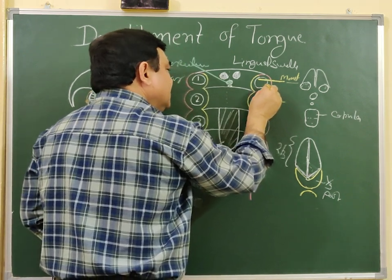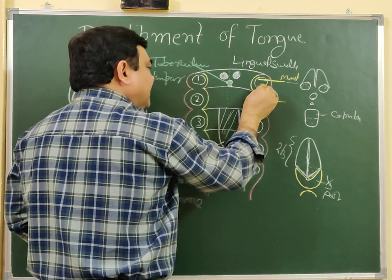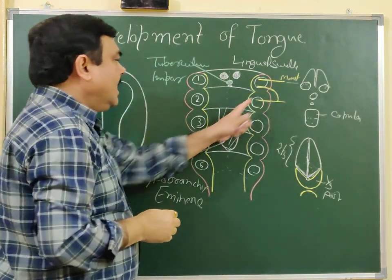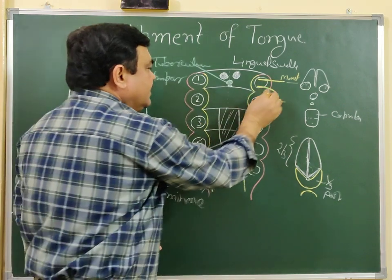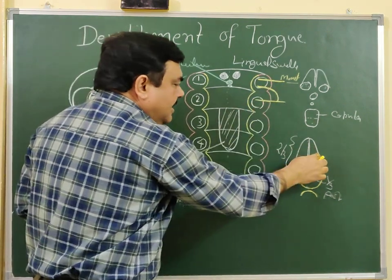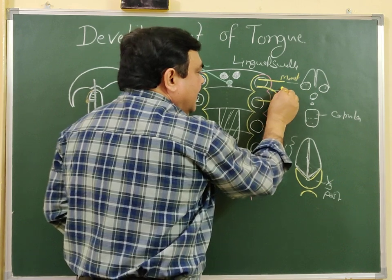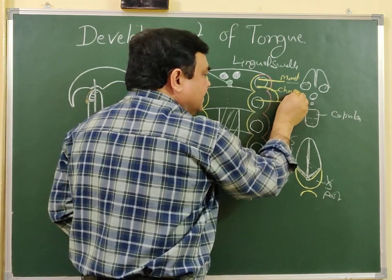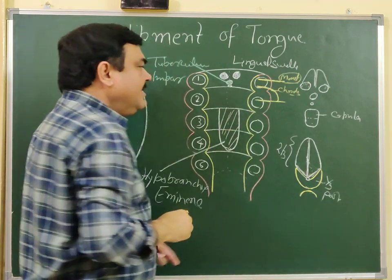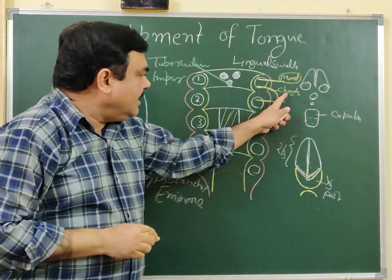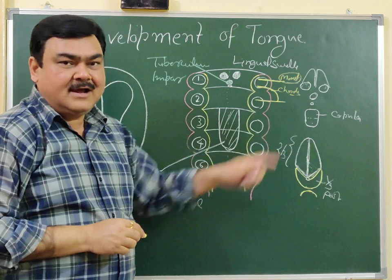The facial nerve gives a branch which is the pre-trematic nerve of the first arch. This is known as chorda tympani. So the anterior two-thirds is supplied by the mandibular nerve and chorda tympani — chorda tympani carries special sensory taste sensation for the anterior two-thirds of the tongue.